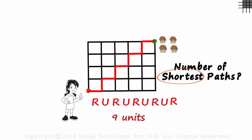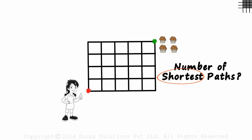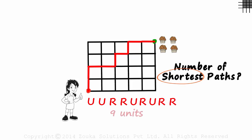Let's take another random path: up, up, right, right, up, right, up, right, right. Again, nine units.